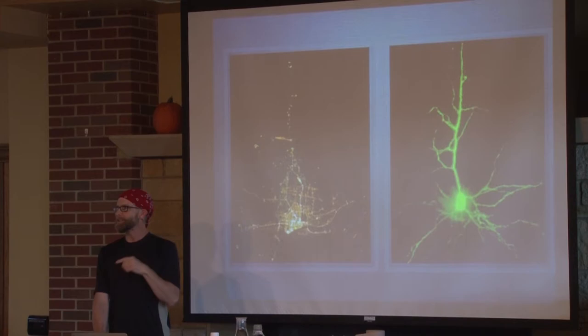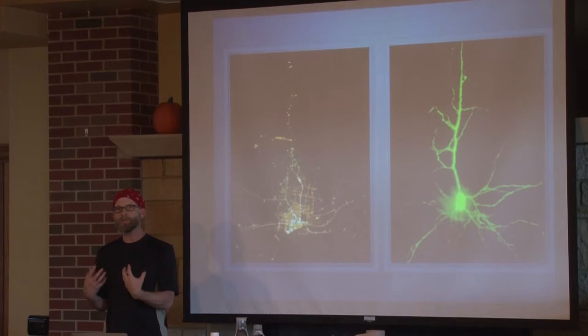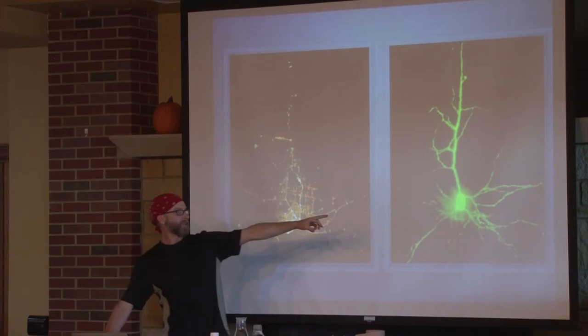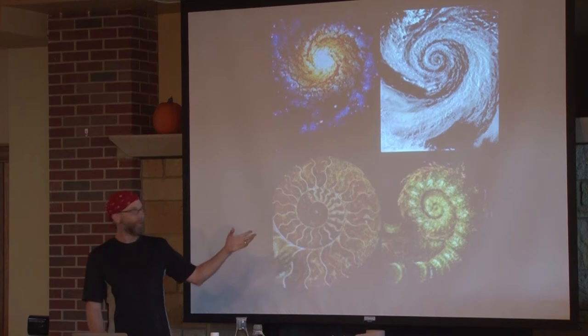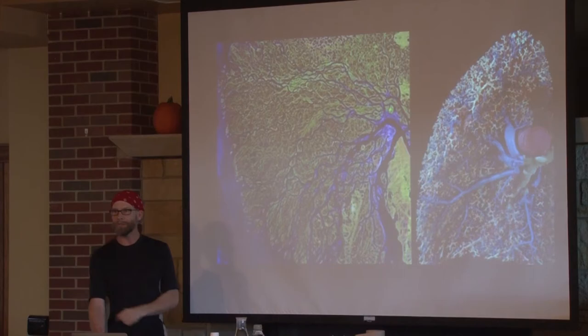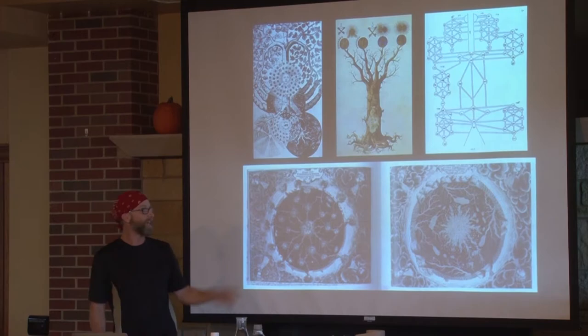There's this concept called constructal law — it's a pseudoscience, make sure you quote me on that — which is the interesting idea that everything in the universe, whether animate or inanimate, in order to continue to exist has to create an efficient system of getting things in and getting things out. The pseudoscience examples are nighttime shots of cityscapes that look exactly like neurons from the human brain, or how Nautilus shells, fiddlehead ferns, hurricanes, galaxies, satellite images of river deltas, and maps of the human lung all share the same form.